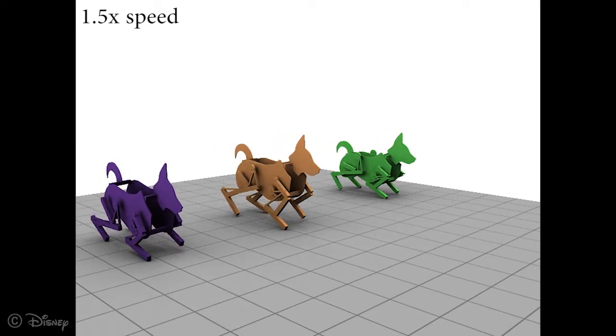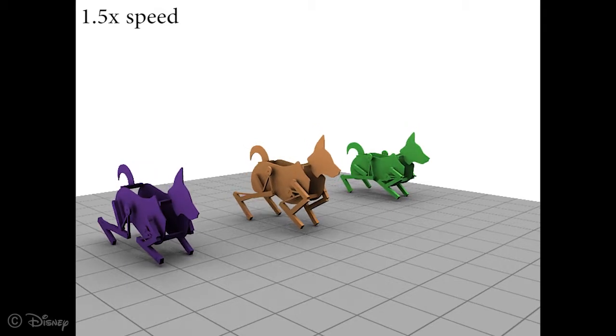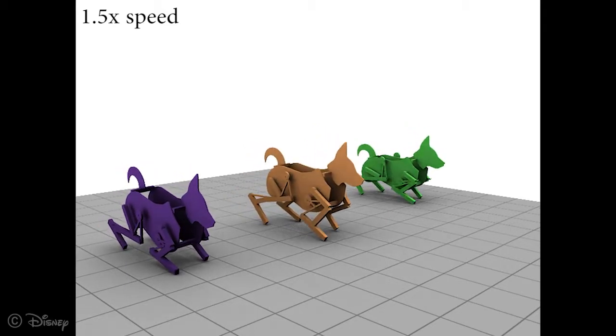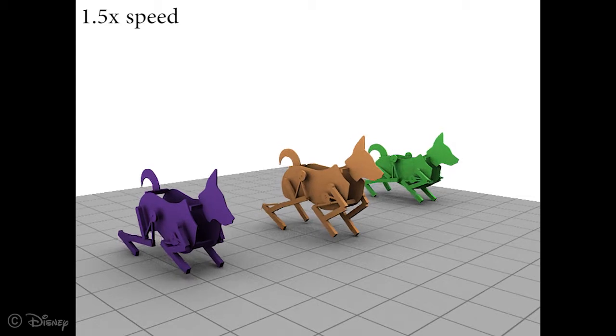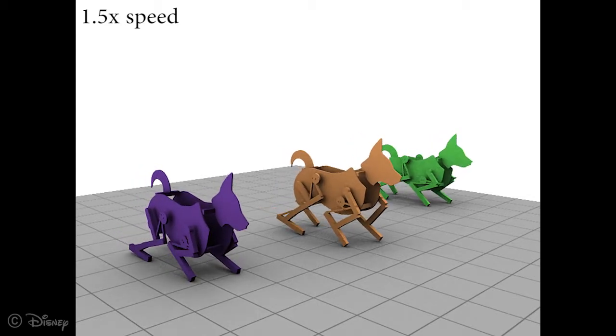As such, repeating the optimization can produce different outcomes, but all outcomes will walk stably, as we see here with three different results from similar initial designs.